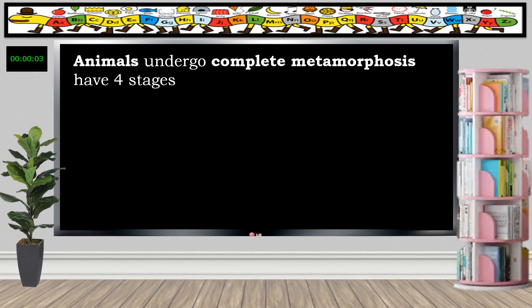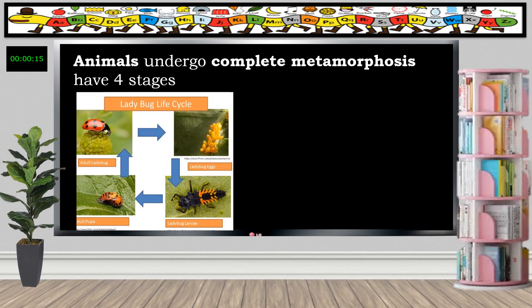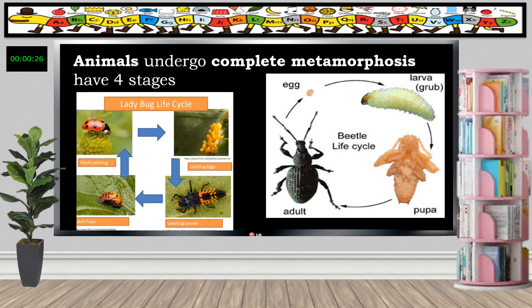On animals, there are animals that undergo complete metamorphosis. When we say complete metamorphosis, it has four stages. For example, the ladybug life cycle starts with egg, then larva, pupa, ladybug. The beetle also goes from egg, larva, pupa, and adult. When an insect or animal undergoes four stages of the life cycle, it is called complete metamorphosis: egg, larva, pupa, adult.